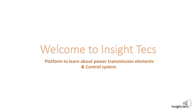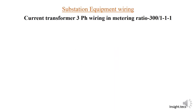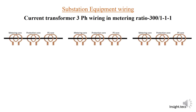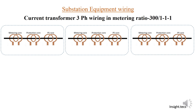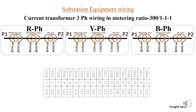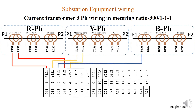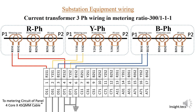Hello friends, welcome to Inside Text, a platform to learn about power transmission elements and its control system. In the previous video we saw how the current transformer three-phase wiring is done with a metering ratio of 300/1. Let us recollect that using this animated diagram — here we have R, Y, and B phase connected for metering, with four wires coming out: d11, d31, d51, and d71. All these four wires go to the metering circuit in the panel using a four-core, four-square-mm cable.